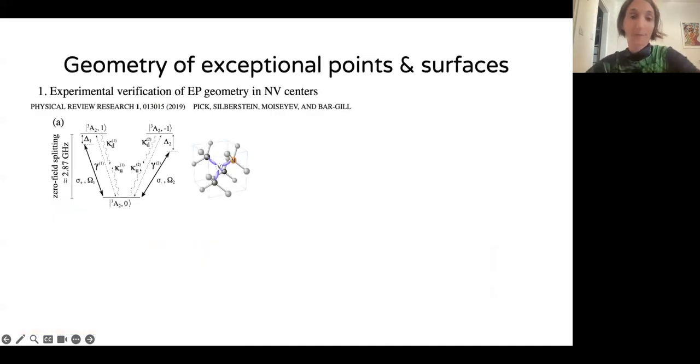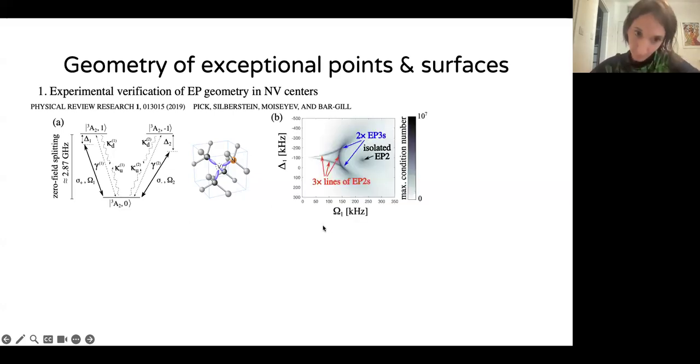We wanted to study the geometry of exceptional lines in a system that we could actually drive and measure. The system we chose is NV centers. This work was done in collaboration with the lab of Nir Bar-Gill in the Hebrew University. He has NV centers, defects in the diamond lattice. Basically, the NV center consists of a substitutional nitrogen atom in a vacancy. The electrons get localized in the vacancy. And this defect acts as an artificial atom. The energy levels of this defect are well known, the ground states are spin triplet states. You can drive transitions between them with microwave fields. And there are known decay mechanisms induced by the environment.